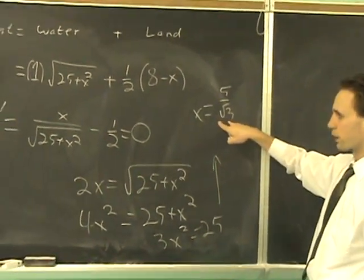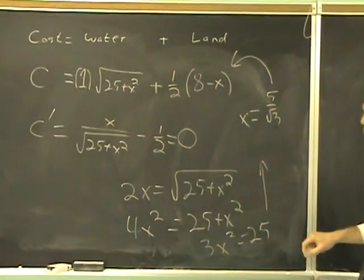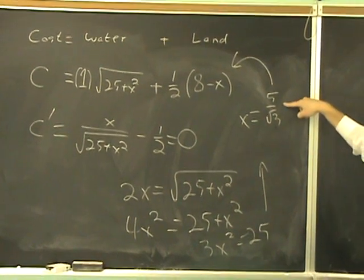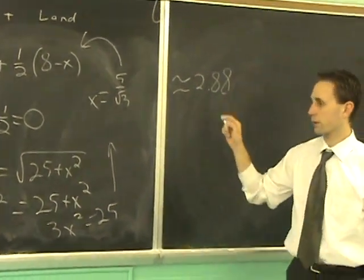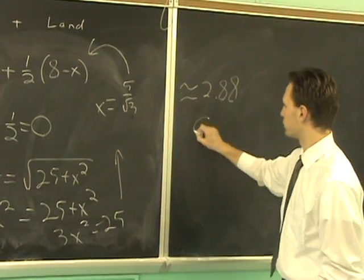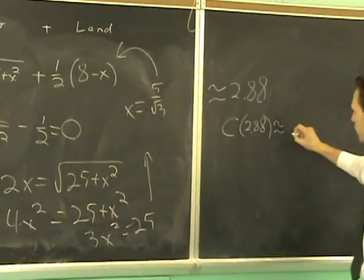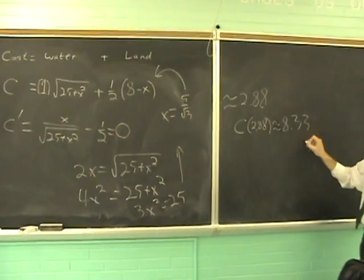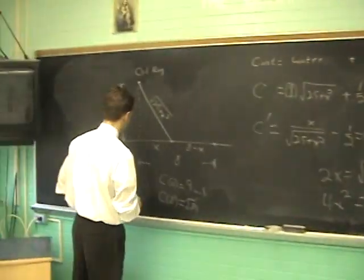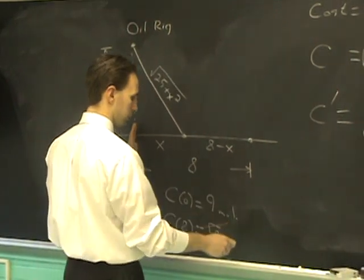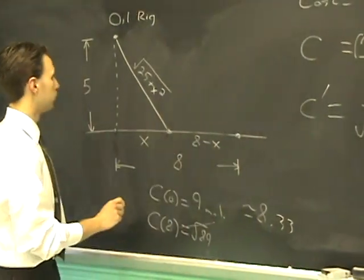So this is our critical number. We have to plug that into the cost function back in here and figure out what that is. 5 over radical 3 is about 2.88. And if you plug that into the function, the answer that you get, C of 2.88, happens to be approximately 8.33 when you work it out. So what we found out was that if you make x equal to 2.88, it will yield the minimum cost of about 8.33 million.